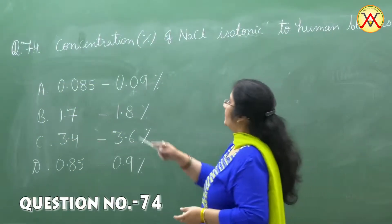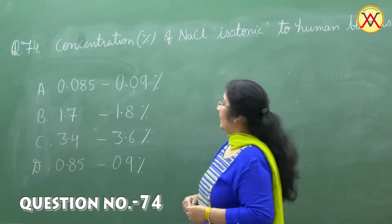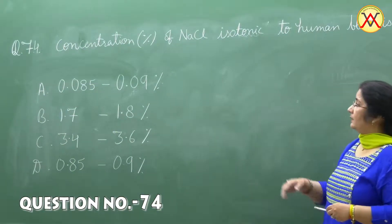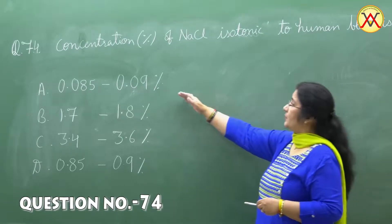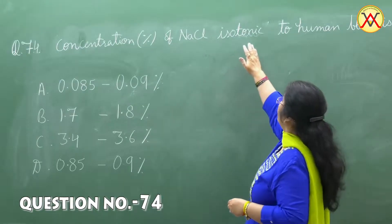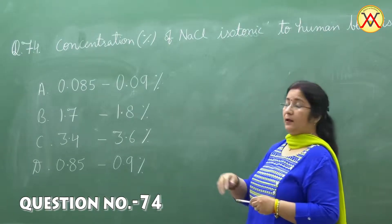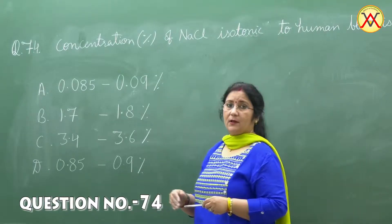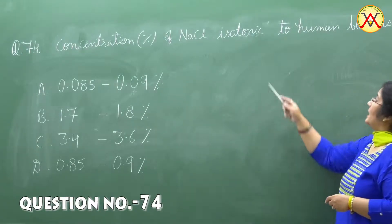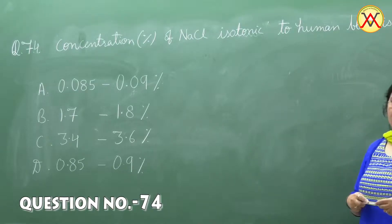In question number 74, we have to find out the range of NaCl solution, given in percentage, that is isotonic to human blood.